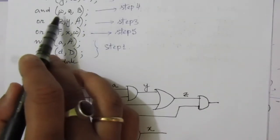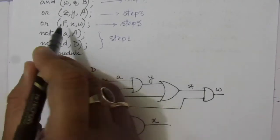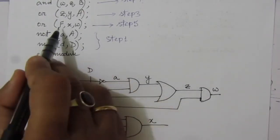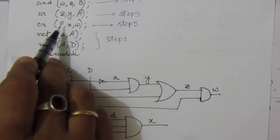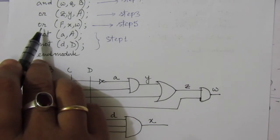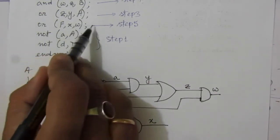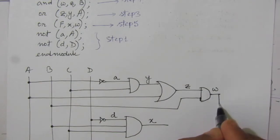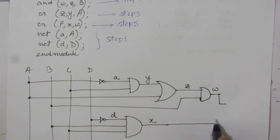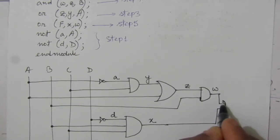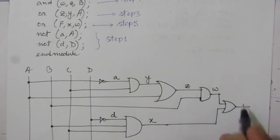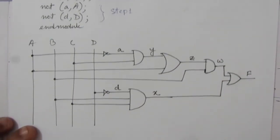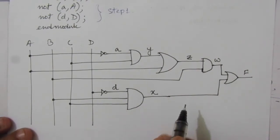In step four, we find w using the AND operation between small z and capital B. One input is small z and the other is capital B, so we use an AND gate and get small w. In step five, we find capital F by doing the OR operation between small x and w. We place an OR gate and here we get capital F — this is the logic diagram for part a.